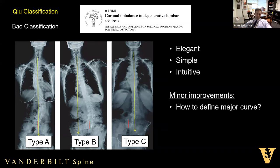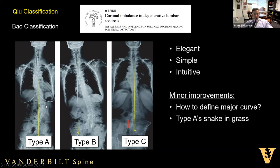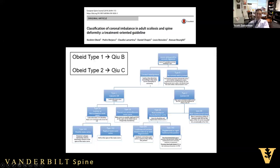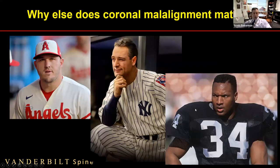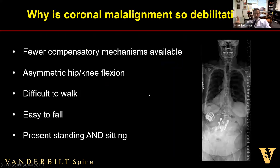Type C patients are really at risk of throwing off the spine. A couple areas for improvement in the Chew classification: there's no way to define the major curve — sometimes the thoracolumbar curve is just as big as the fractional curve — and Type A's are the snake in the grass. You think Type A, less than three centimeters, they're good; but if you correct the major curve in a Type A patient with a balanced-looking but asymmetric spine, you can throw them off — creating iatrogenic coronal malalignment. Type B's are in some ways the easiest: correct the curve and the head goes over the hip and pelvis.